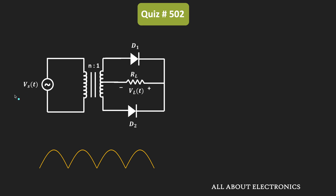So here, Vs is the input to the primary side. The turns ratio of this transformer is equal to n:1. That means on the secondary side, if we see the output voltage, then that is equal to Vs divided by n. And it will get divided between these two parts — so the voltage at each end is equal to Vs divided by 2n.